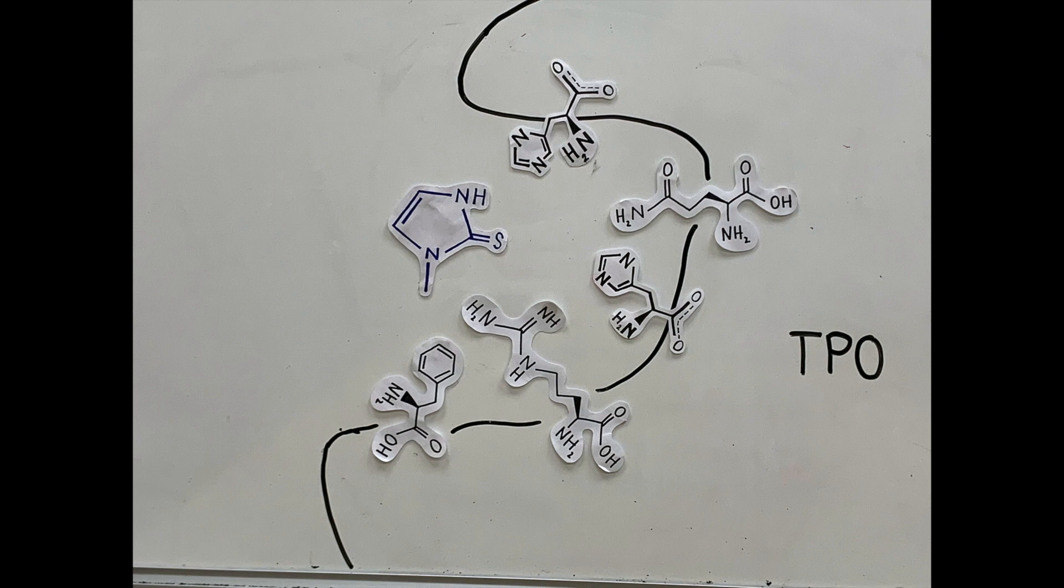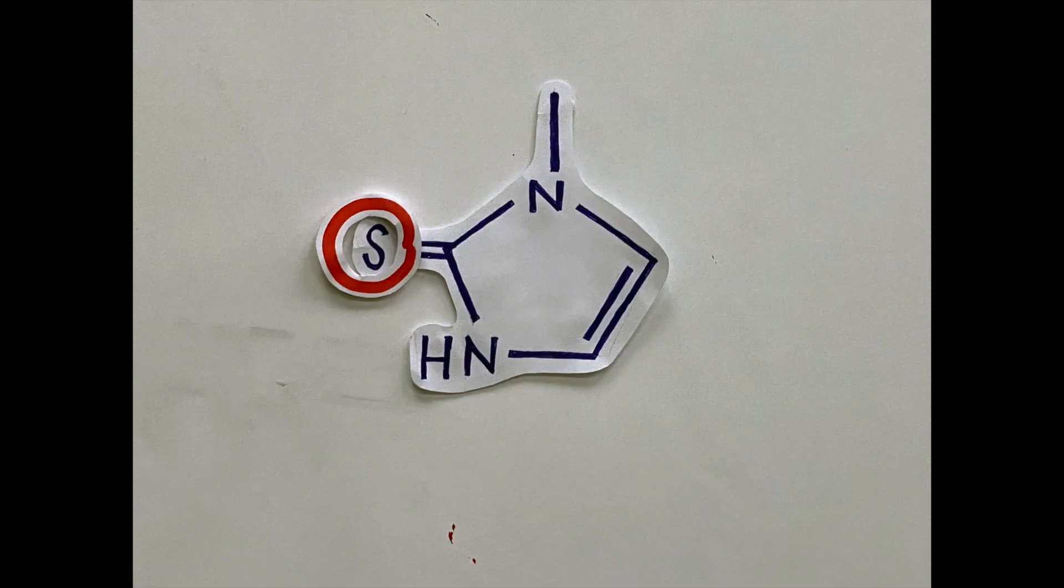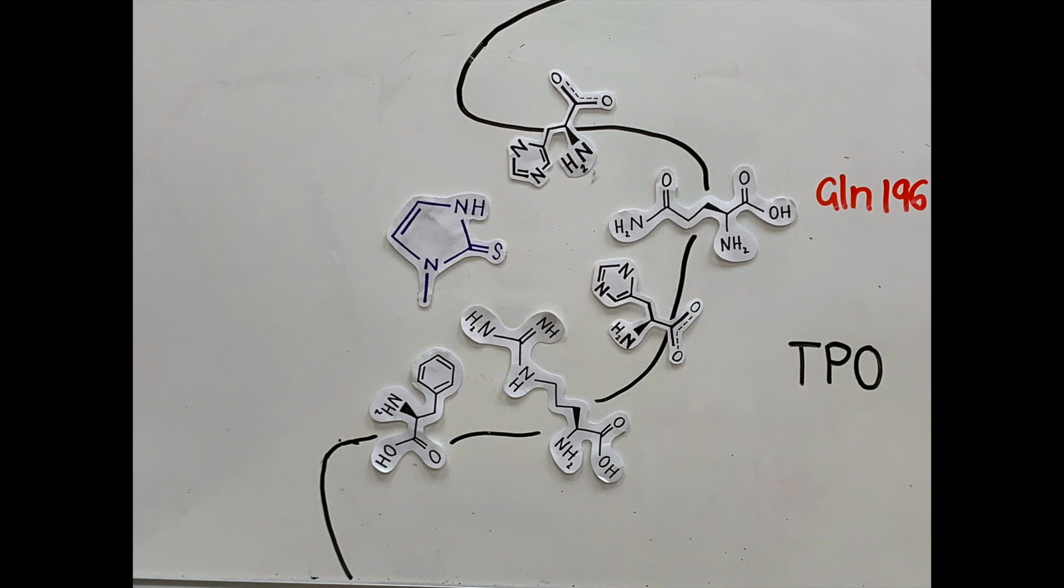Such as, the sulfur on the methimazole would form contacts with the heme iron, glutamine-196, and histidine-200.